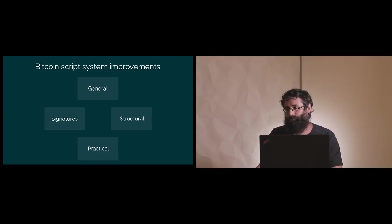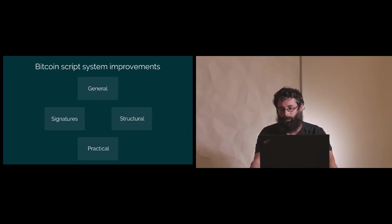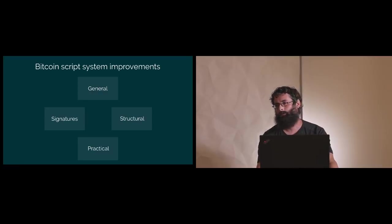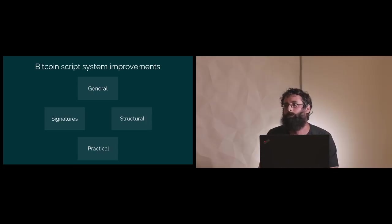I will first start with some general ideas about how we should think about the scripting language, then go into two kinds of topics in particular: signatures and the structure of the Bitcoin scripting system and changes to that. And then conclude with some remarks about how this can be brought to production, which is a non-trivial thing.